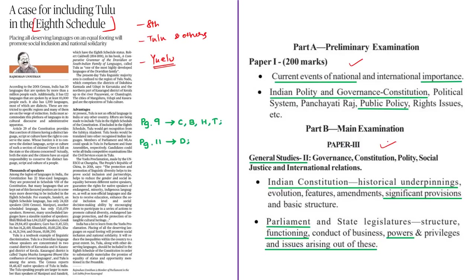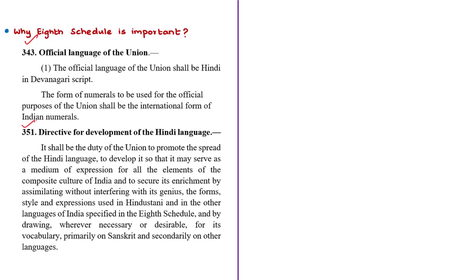To understand the Eighth Schedule, you need to know about Articles 343 and 351 of the Indian Constitution. Article 343 states that the official language of the Union shall be Hindi written in Devanagari script. Article 351 provides that it shall be the duty of the Union to promote the spread of Hindi so that it may serve as a medium of expression for all elements of the composite culture of India. It also states that Hindi needs to be enriched by absorbing forms, styles, and expressions used in Hindustani and in the other languages specified in the Eighth Schedule.